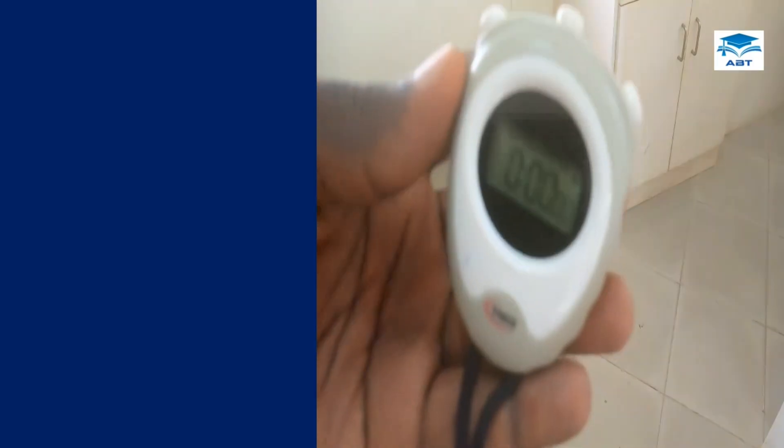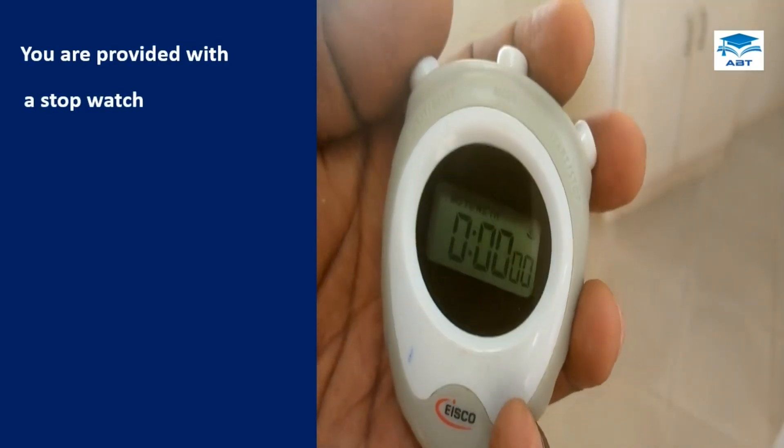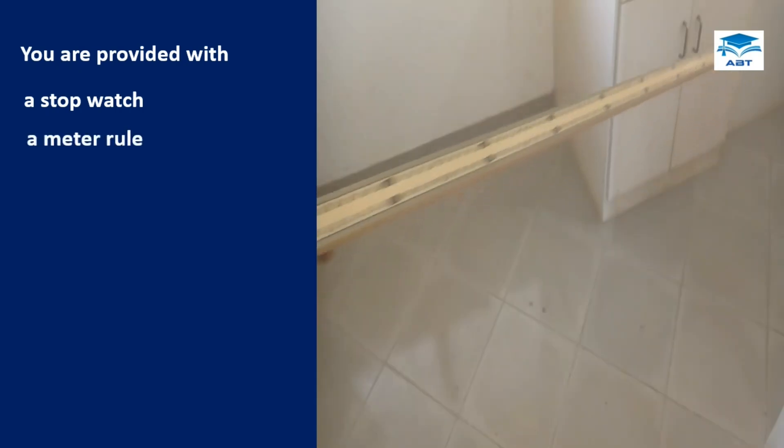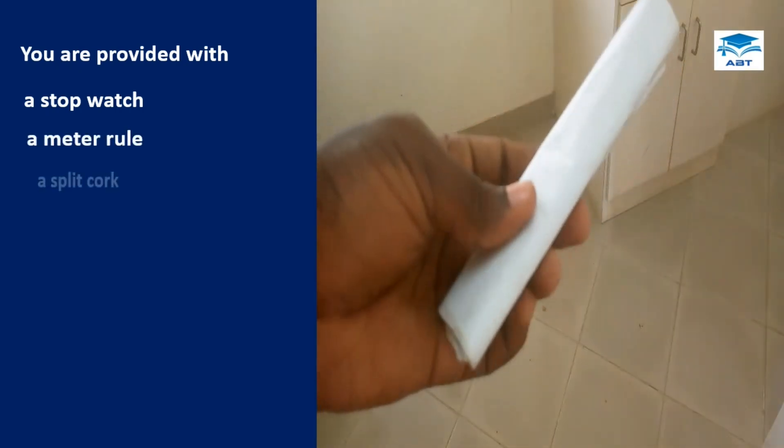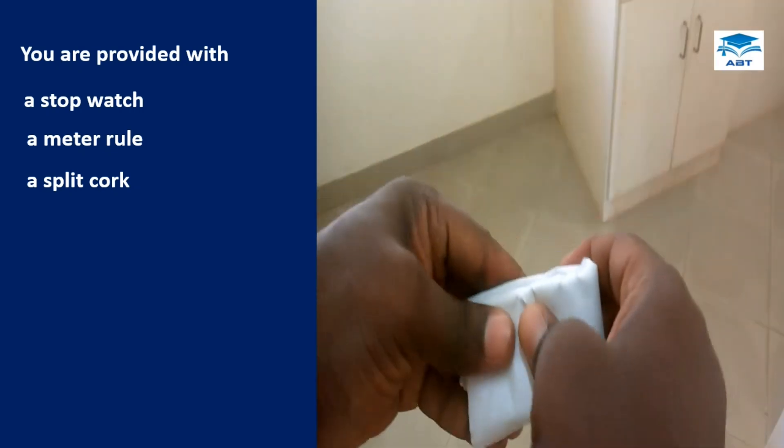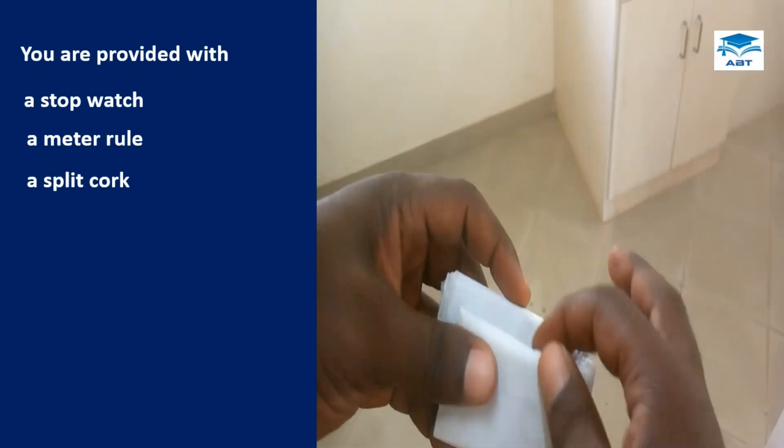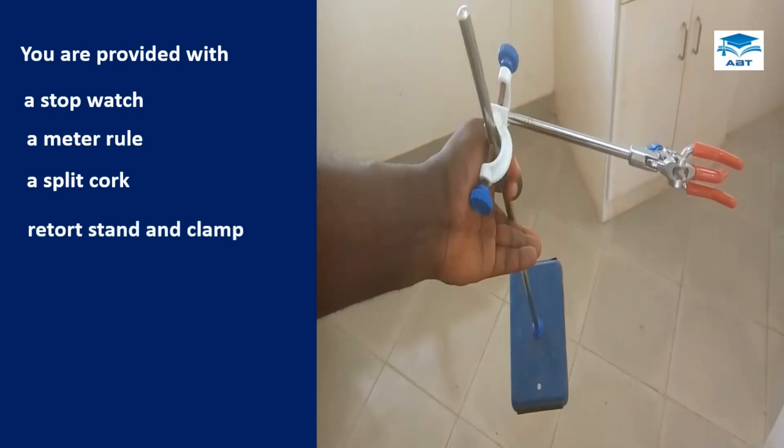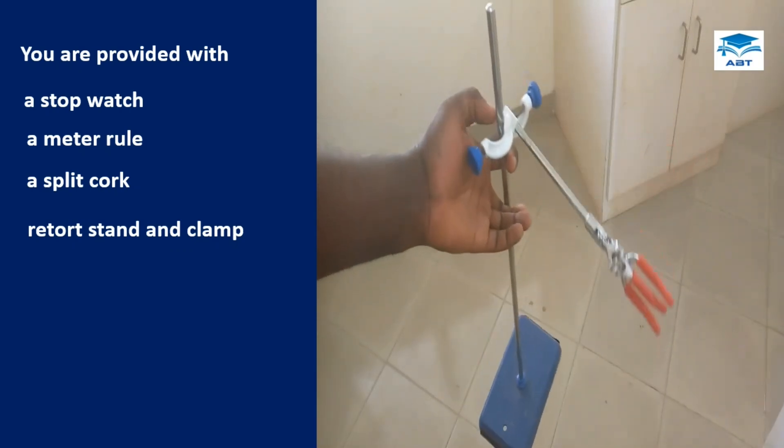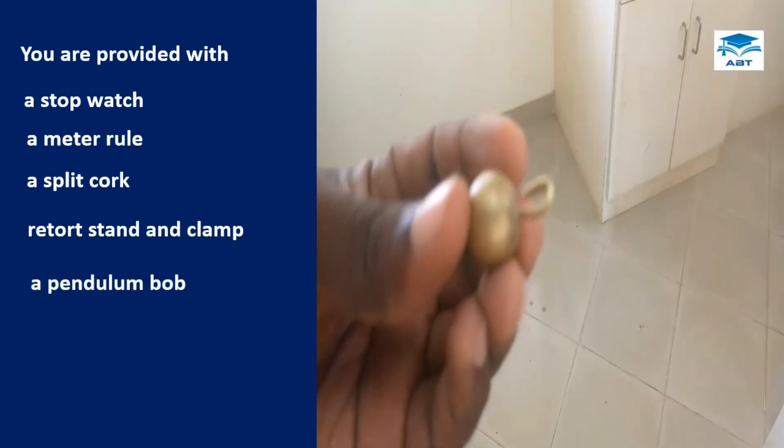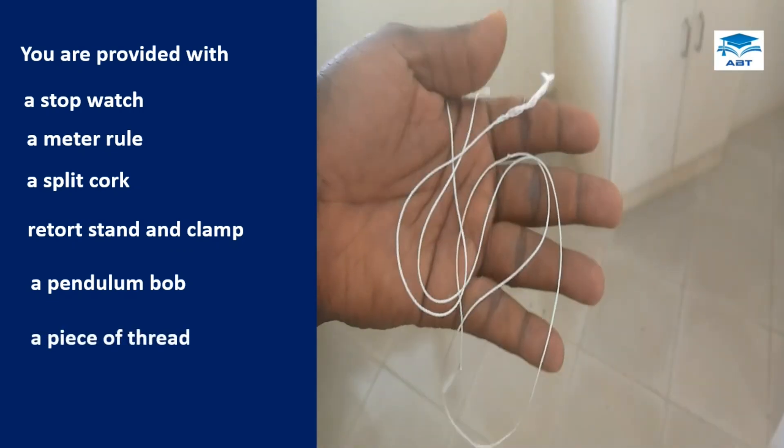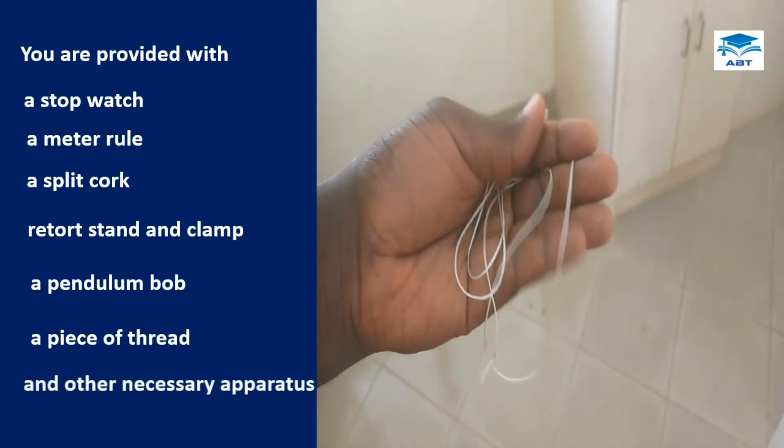The introductory part of the question says you are provided with a stopwatch, a meter rule, a splitcock (we don't have one so we can fold a paper and use it in place of the splitcock), retort stand and clamp, a pendulum bulb, a piece of thread, and other necessary apparatus.